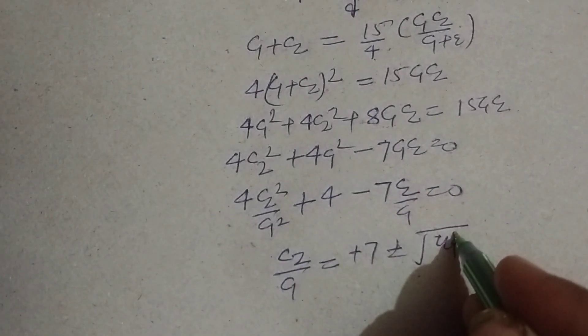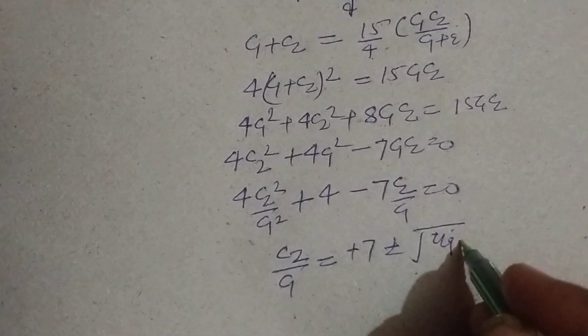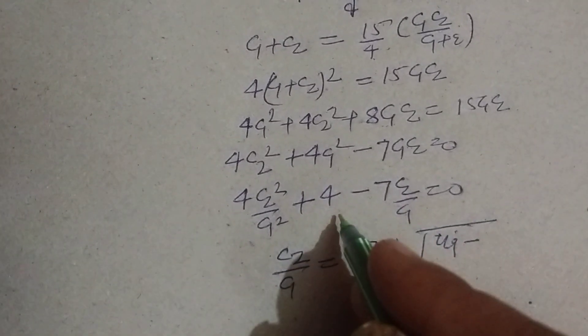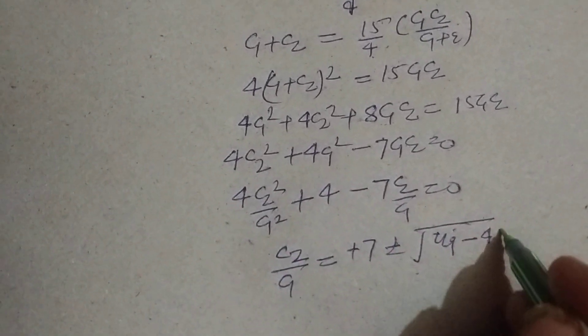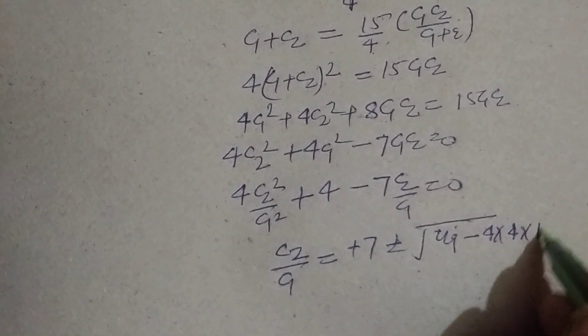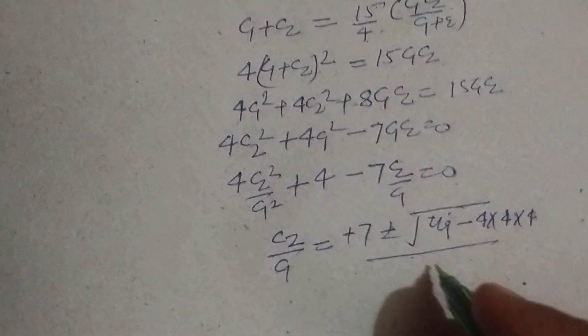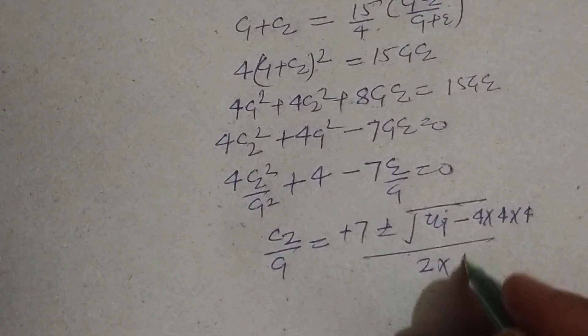minus 4, A is 4, C is 4, upon 2, 2 into A is 4.